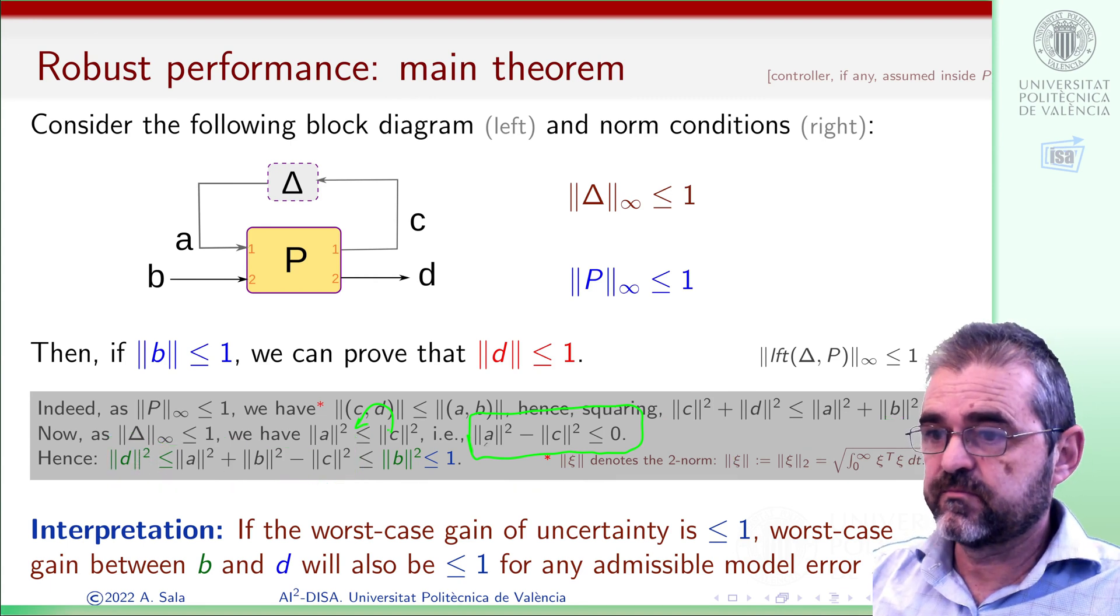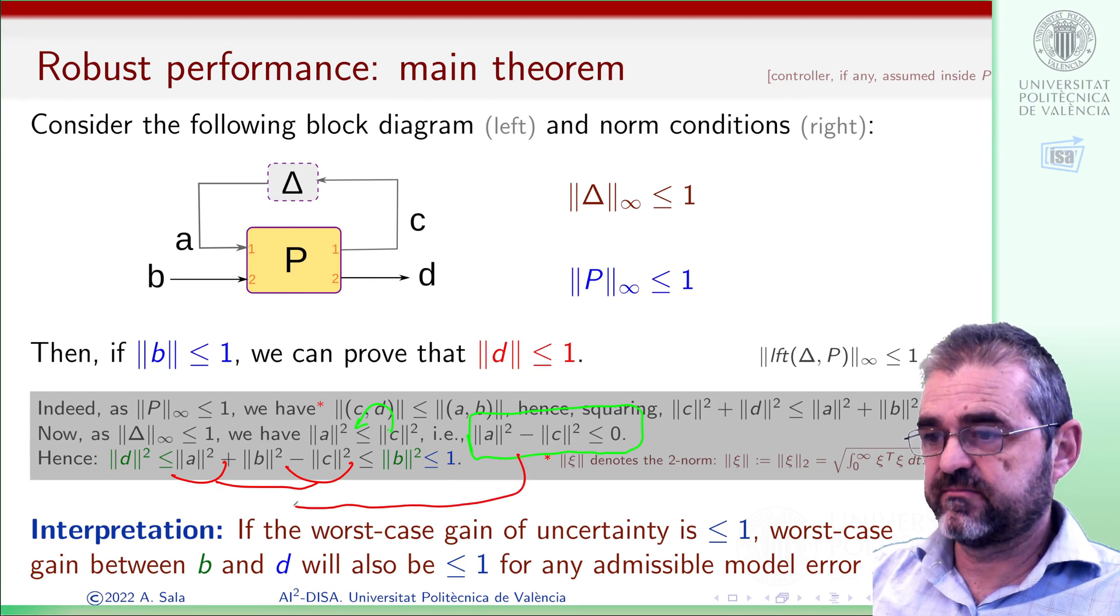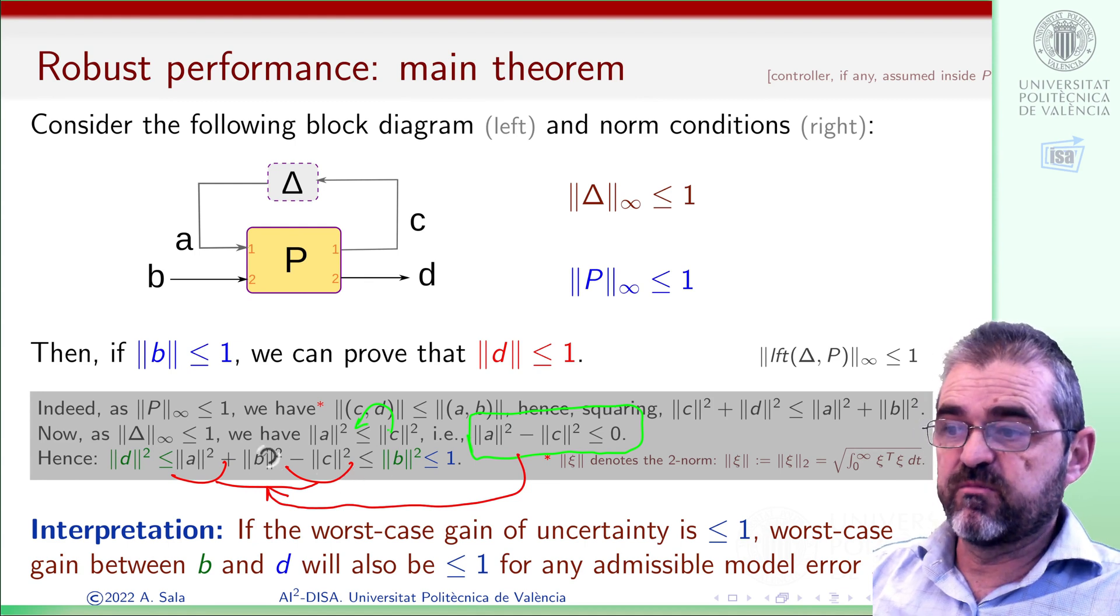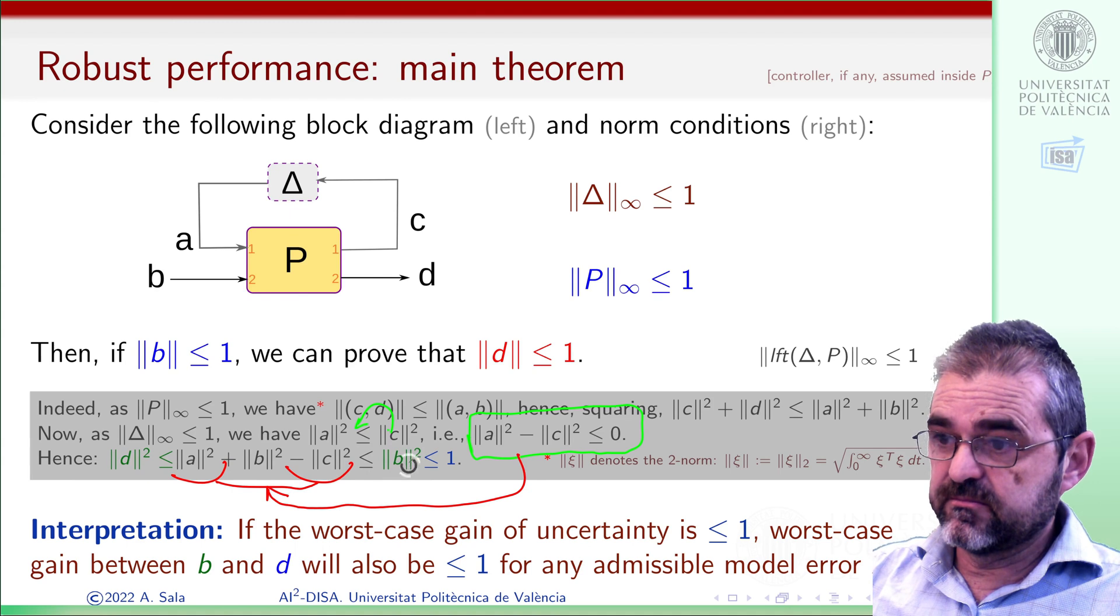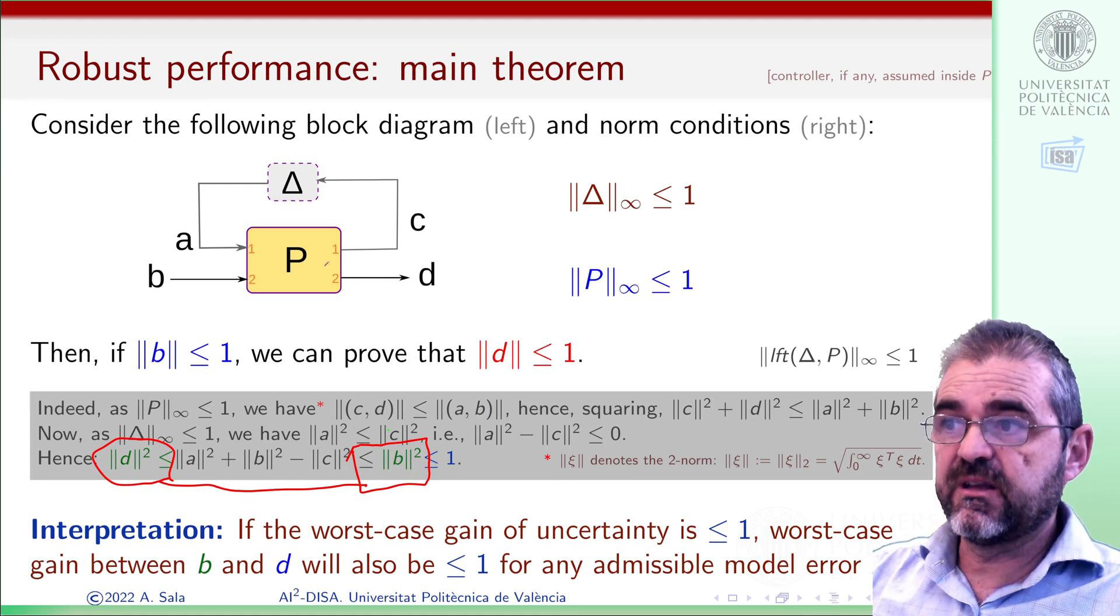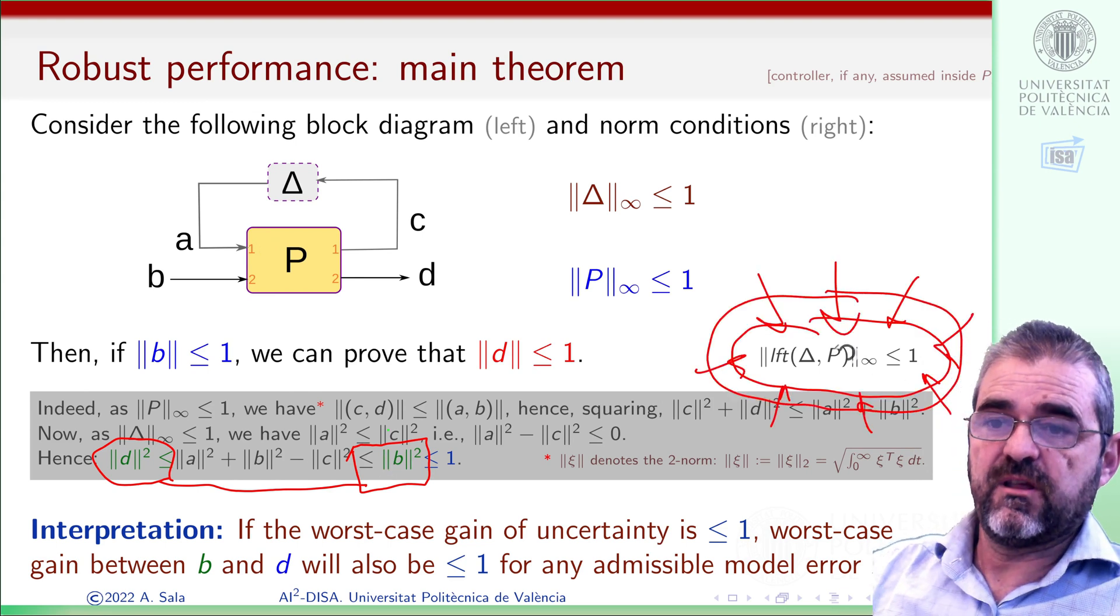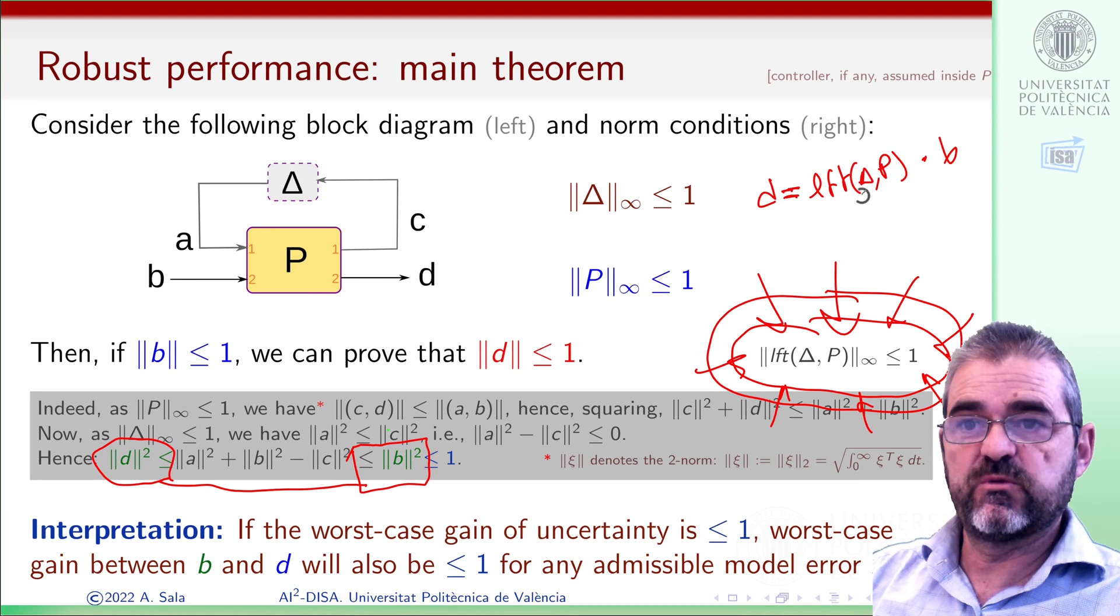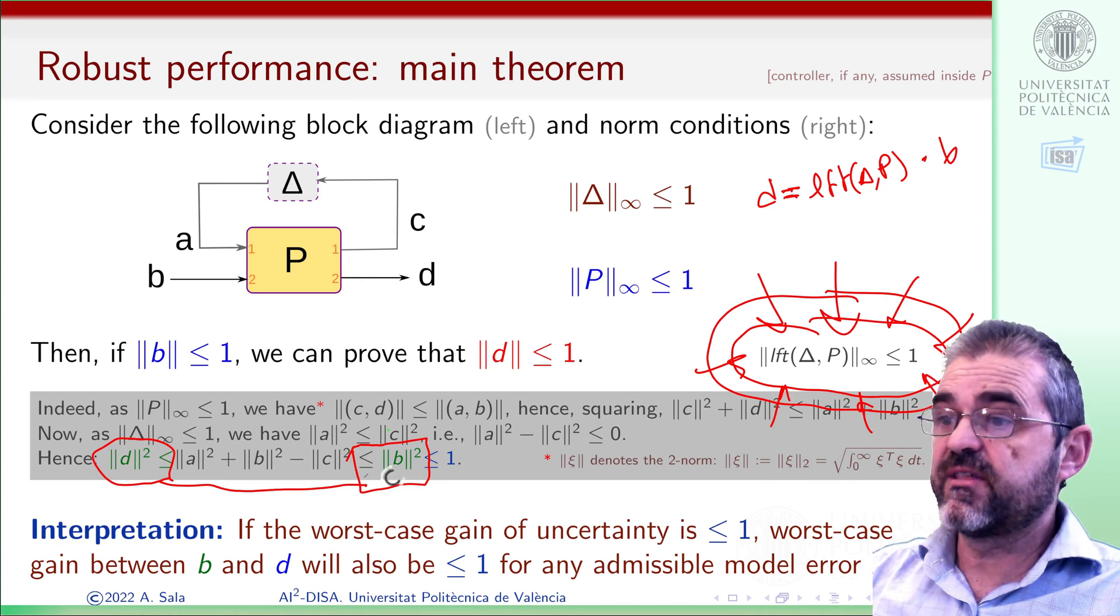Because now we can see that norm of A squared minus norm of C squared is what we have there, and this is a negative number. So the norm of B plus the negative number is, of course, smaller than the norm of B alone. So we have the result. The worst-case gain between B and D in closed loop with this delta is less than 1. And this is what we wanted to prove, because D is the linear fractional transformation interconnection between delta and P, subject to input B. And the worst-case gain of that thing is less than 1.